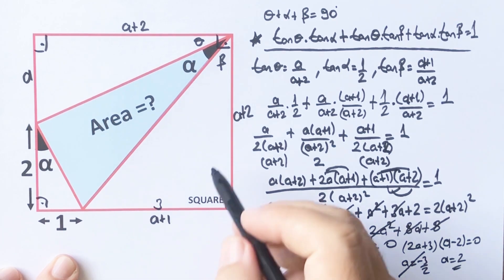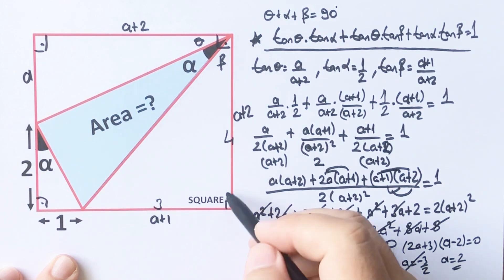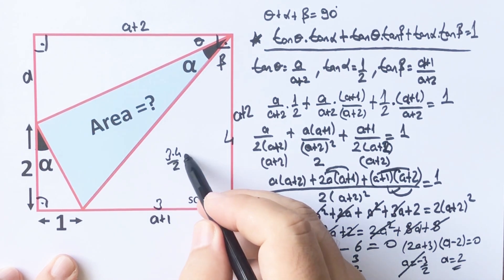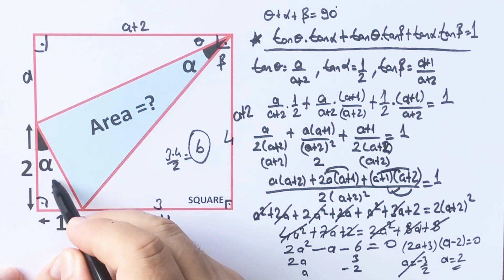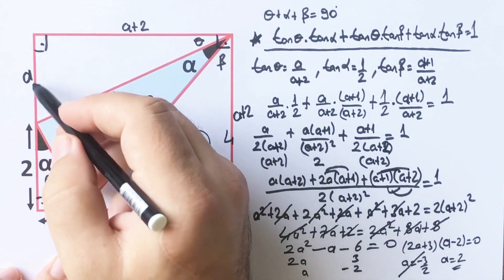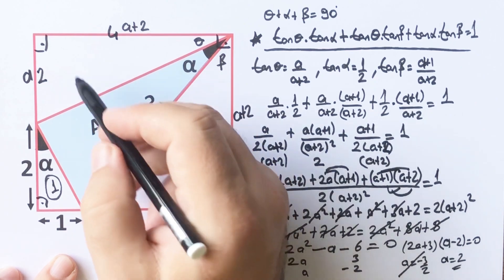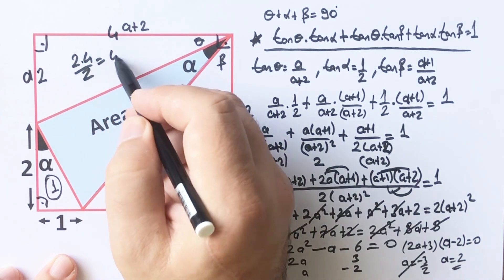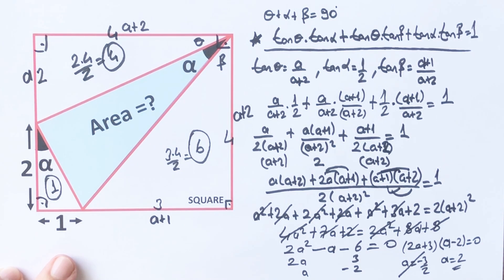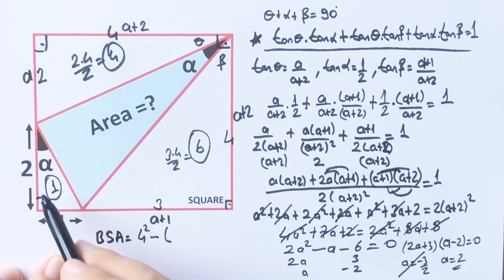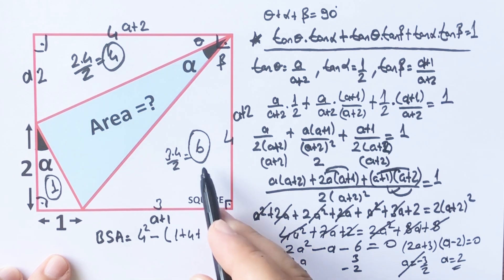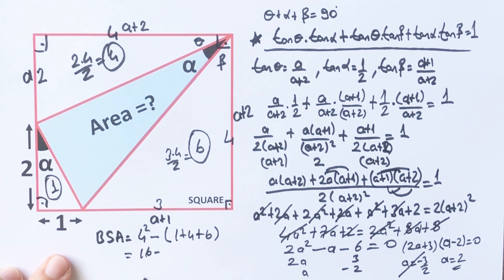So this length must be three and this length must be four. Therefore, the large triangle area equals six square units, this small triangle equals one square unit, and this triangle — with base two and height four — has area four square units. Now we can calculate the blue shaded area easily. Blue shaded area equals the square area minus these three triangle areas, so the blue shaded area equals five square units.